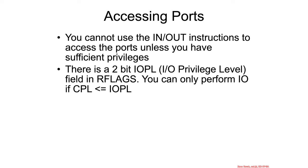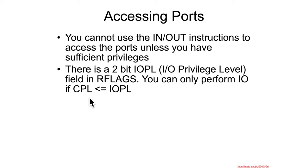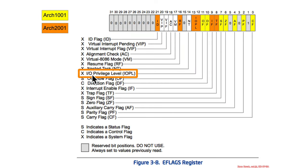Before you can access ports using the IN and OUT instructions, you have to have the necessary privileges. There's a 2-bit IO privilege level field in the RFLAGS register, and you can't use the IN and OUT assembly instructions unless the IOPL is such that your CPL — your current privilege level — is less than or equal to the IO privilege level. So if IOPL is 0, your CPL must be 0. If IOPL is 3, then CPL values 0, 1, 2, and 3 are all capable of accessing it.